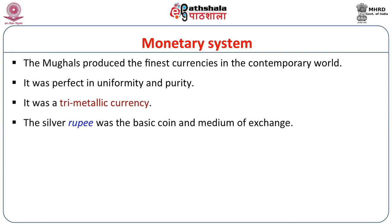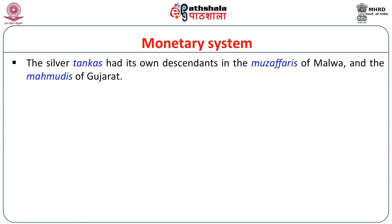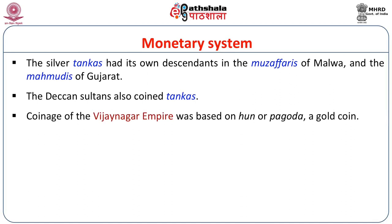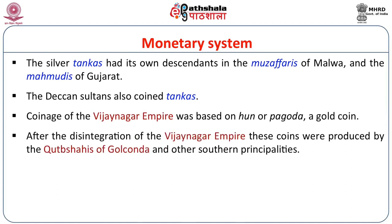It was a tri-metallic currency, and the silver rupee was the basic coin and medium of exchange. Silver was not found in India and always had to be imported. During the time of Sher Shah, the money in circulation was called Sikandari — a copper coin with a dash of silver alloy, developed after debasement of the silver tanka of the Delhi Sultanate. The silver tanka had descendants in the Muzaffaris of Malwa and the Mahmudis of Gujarat. The coinage of the Vijayanagara empire was based on the Huna pagoda or gold coin, produced later by the Qutubshahis of Golconda and other southern principalities.